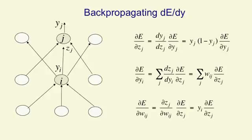Backpropagation is an algorithm for taking one training case and computing efficiently, for every weight in the network, how the error will change on that particular training case as you change the weight.